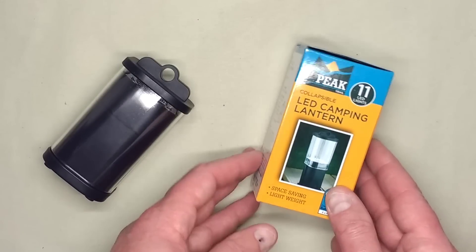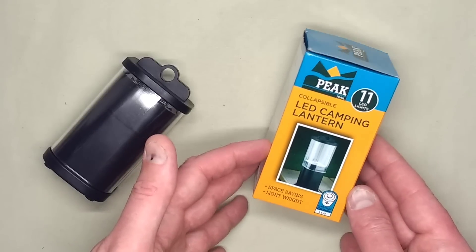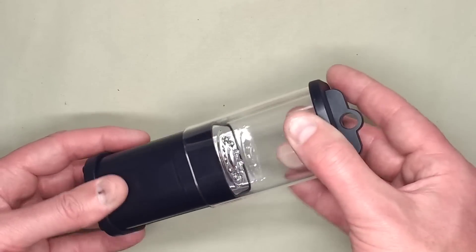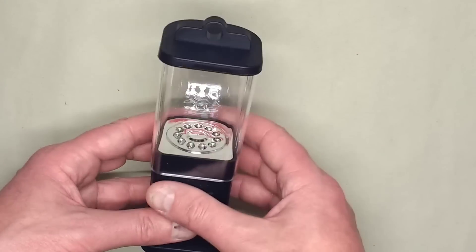Someone recently mentioned they bought one of these Poundland LED camping lanterns and were really impressed at how long the batteries seemed to last. They put a set of batteries in and it seemed to run for a real long time without really losing intensity. That's down to the characteristics of LEDs.